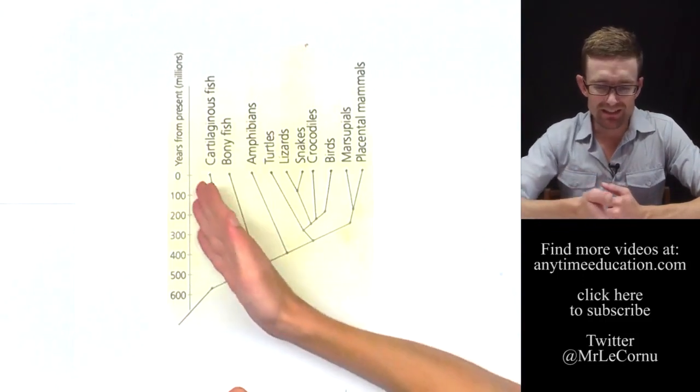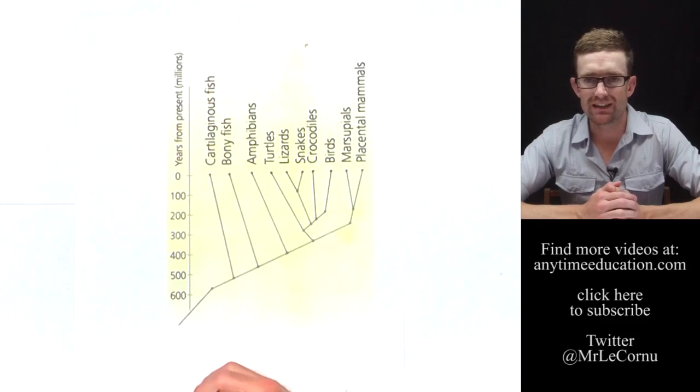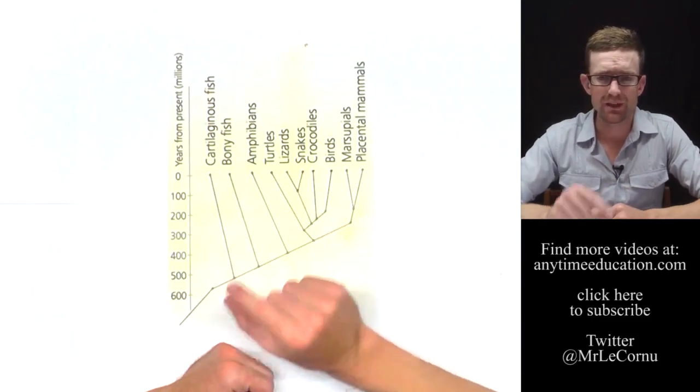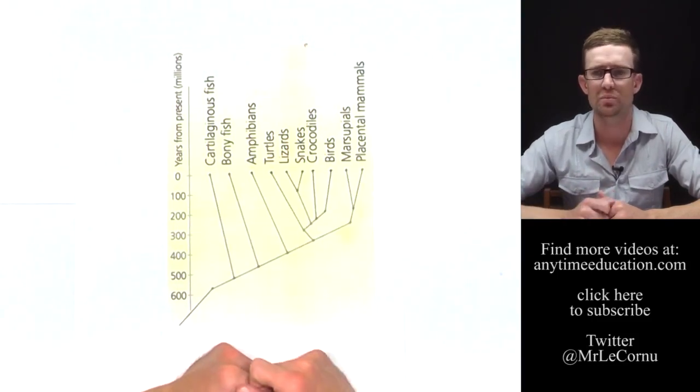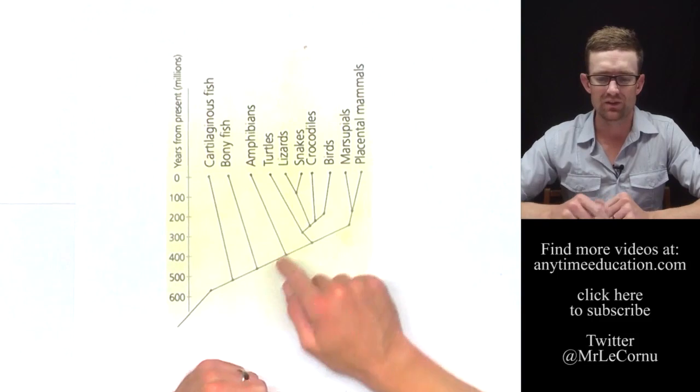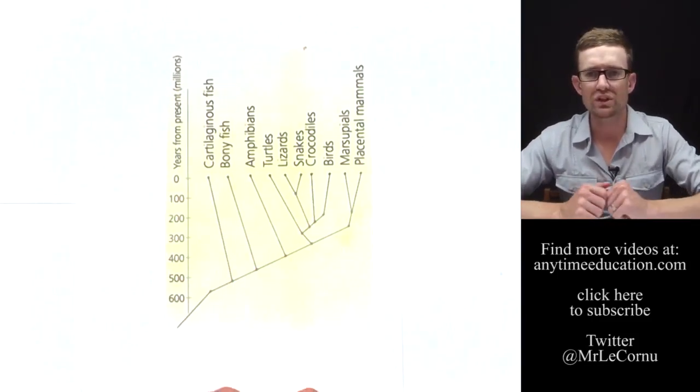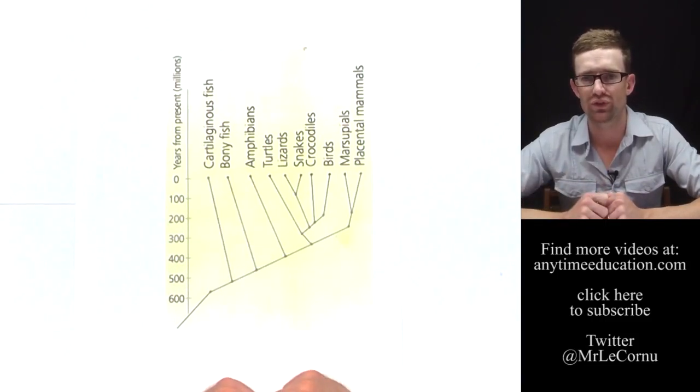Now remember, species have evolved as a result of changes in their DNA. So if two species separated recently, there's been less time for their DNA to change and so their DNA will be more similar. If species separated a long time ago, there's been more time for their DNA to change and so you would expect to see more differences in their DNA sequences.